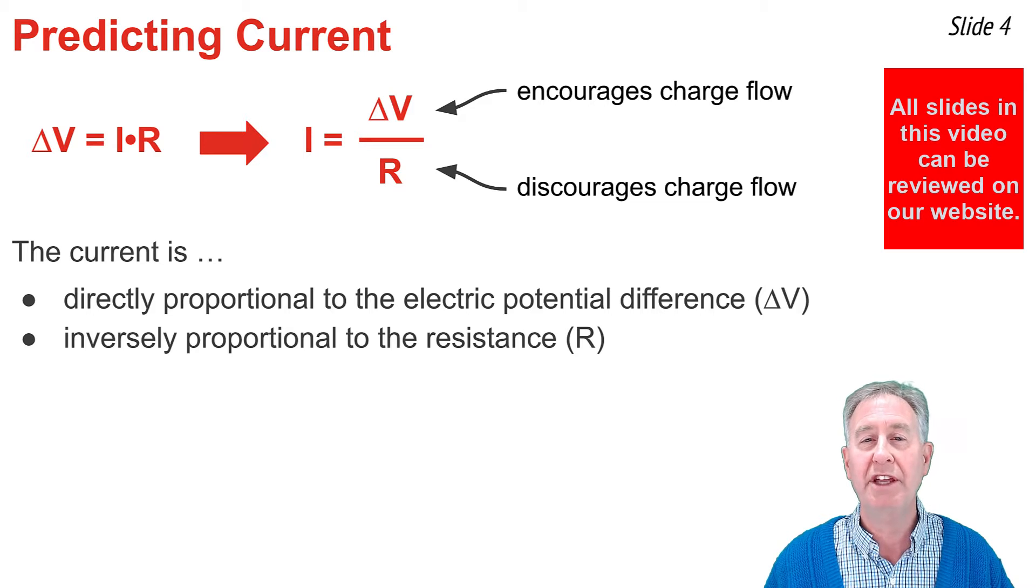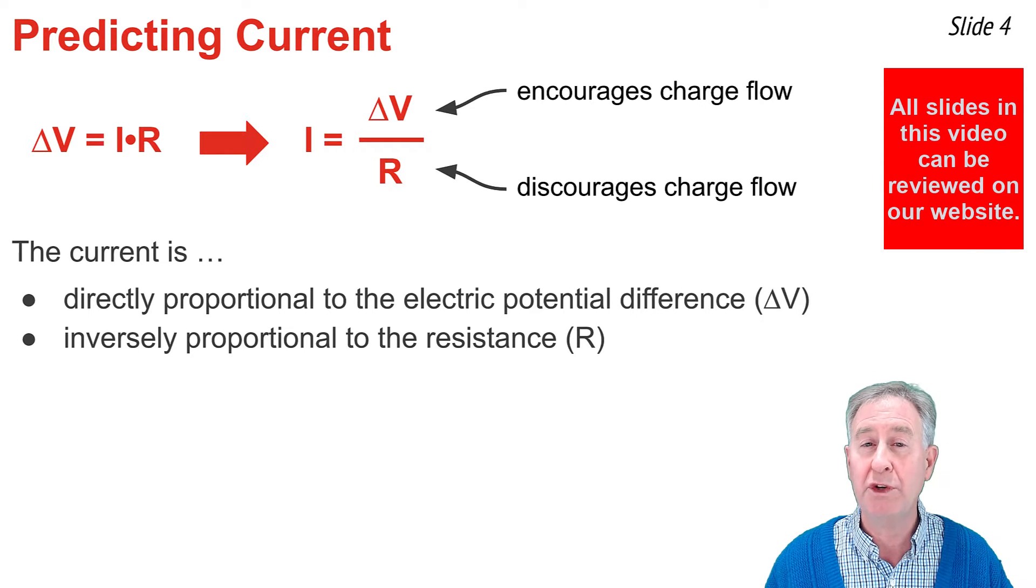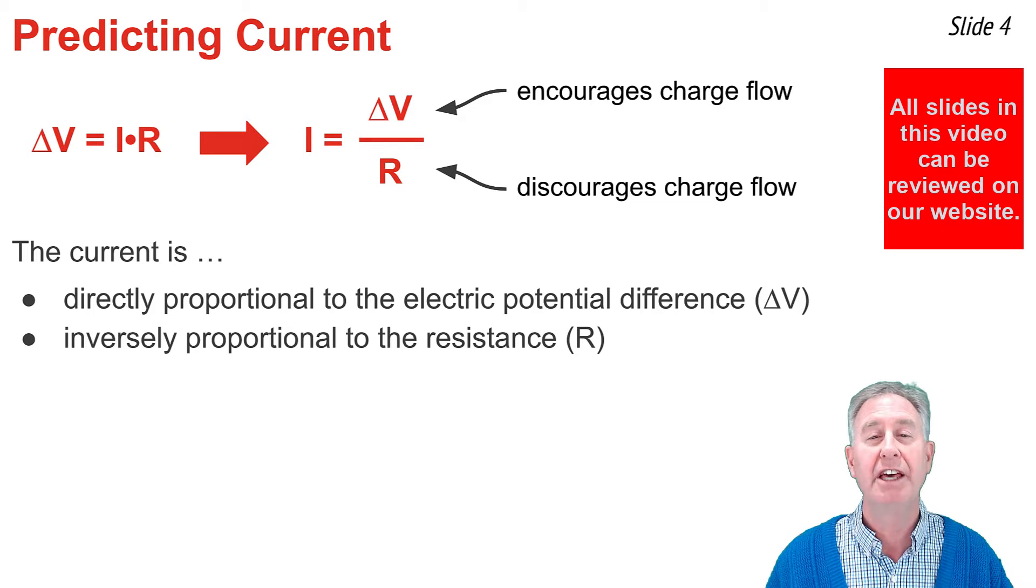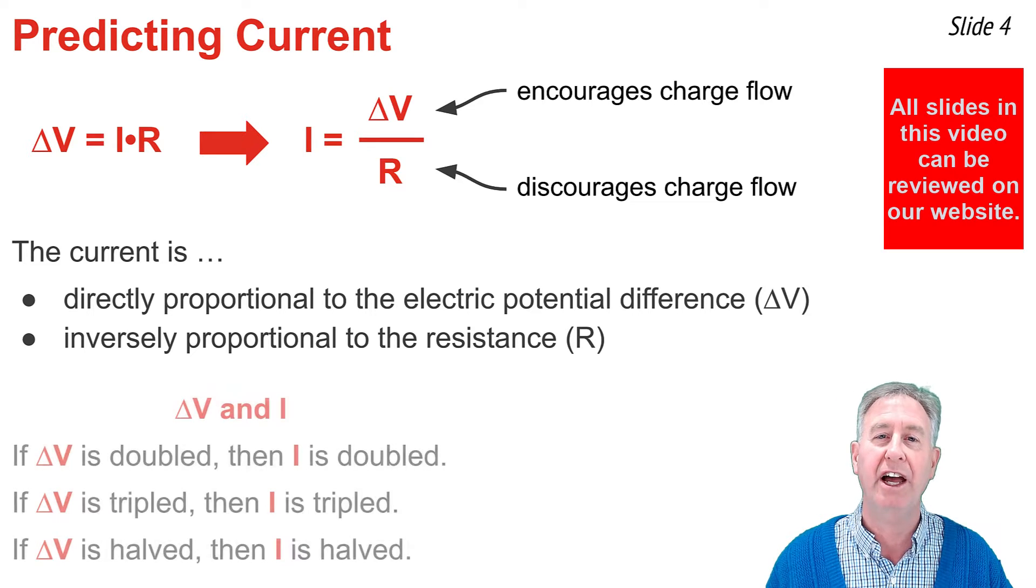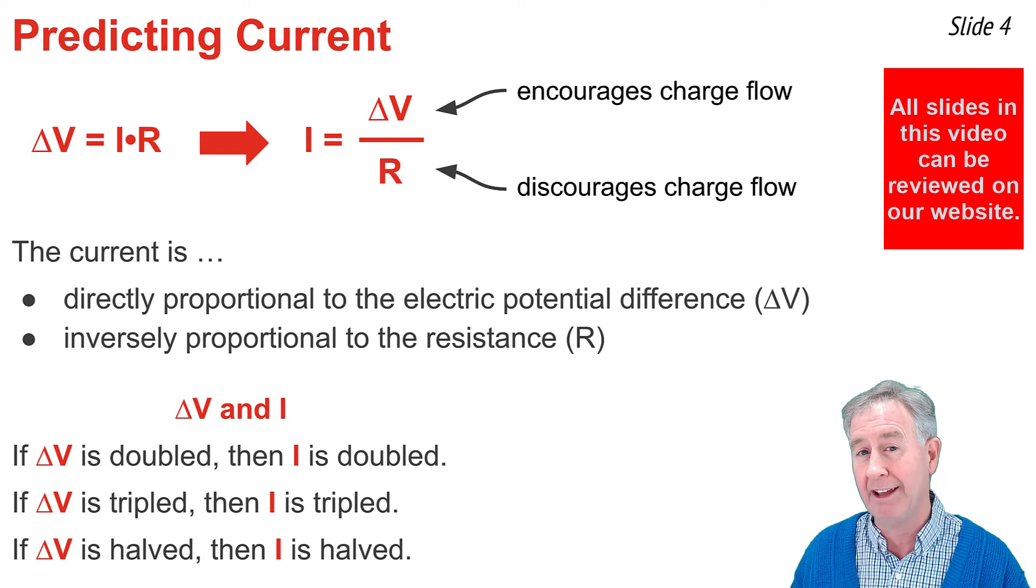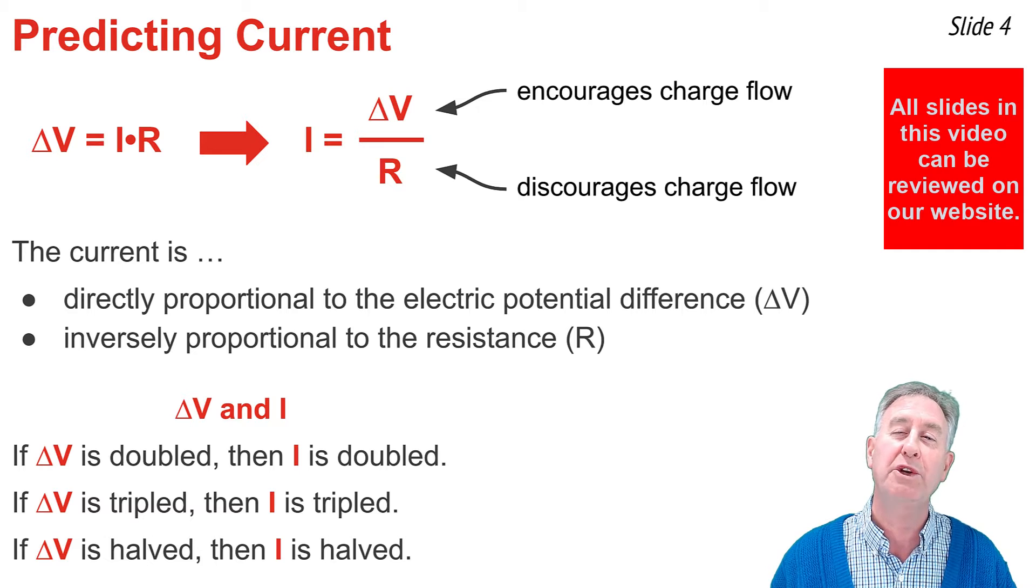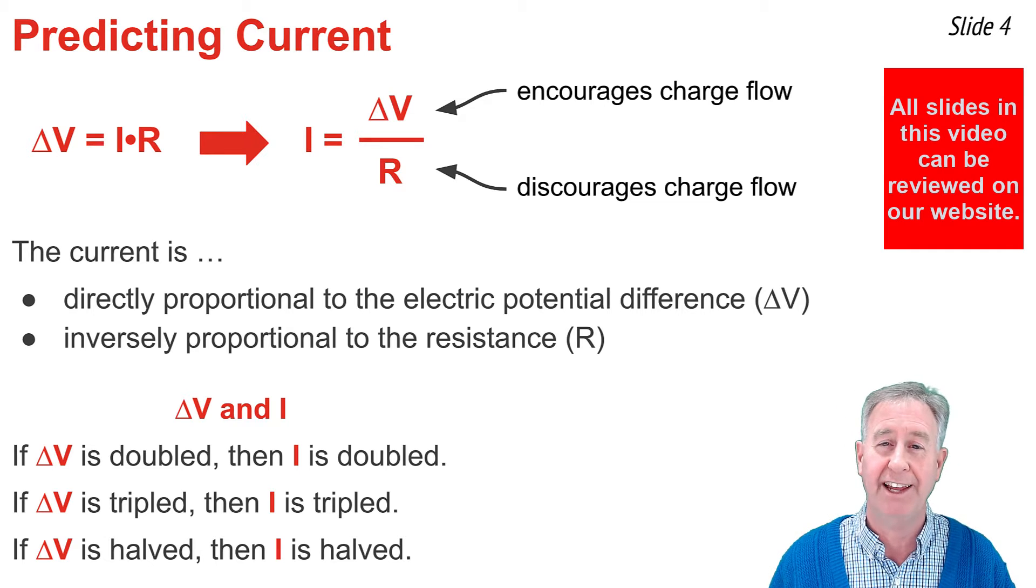When we say that delta V and I are directly proportional, we mean that whatever change we make to delta V, the same change is made to I. In other words, if you double delta V, you double I. If you triple delta V, you triple I. And if you halve delta V, you halve I.